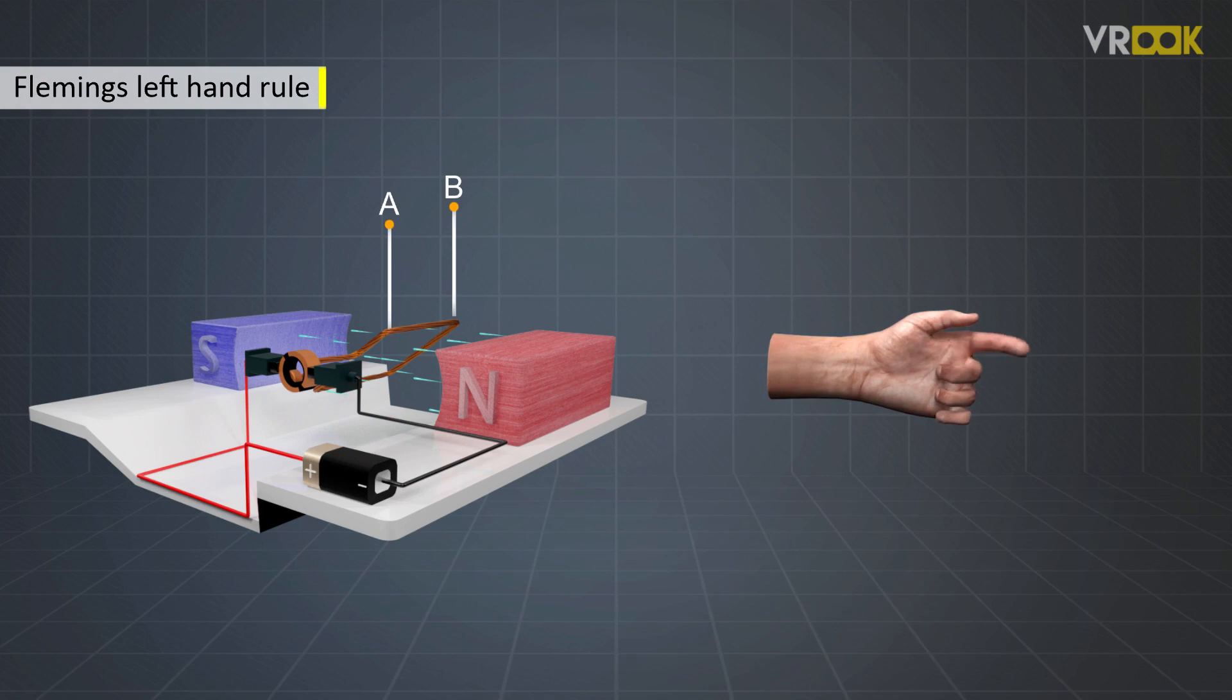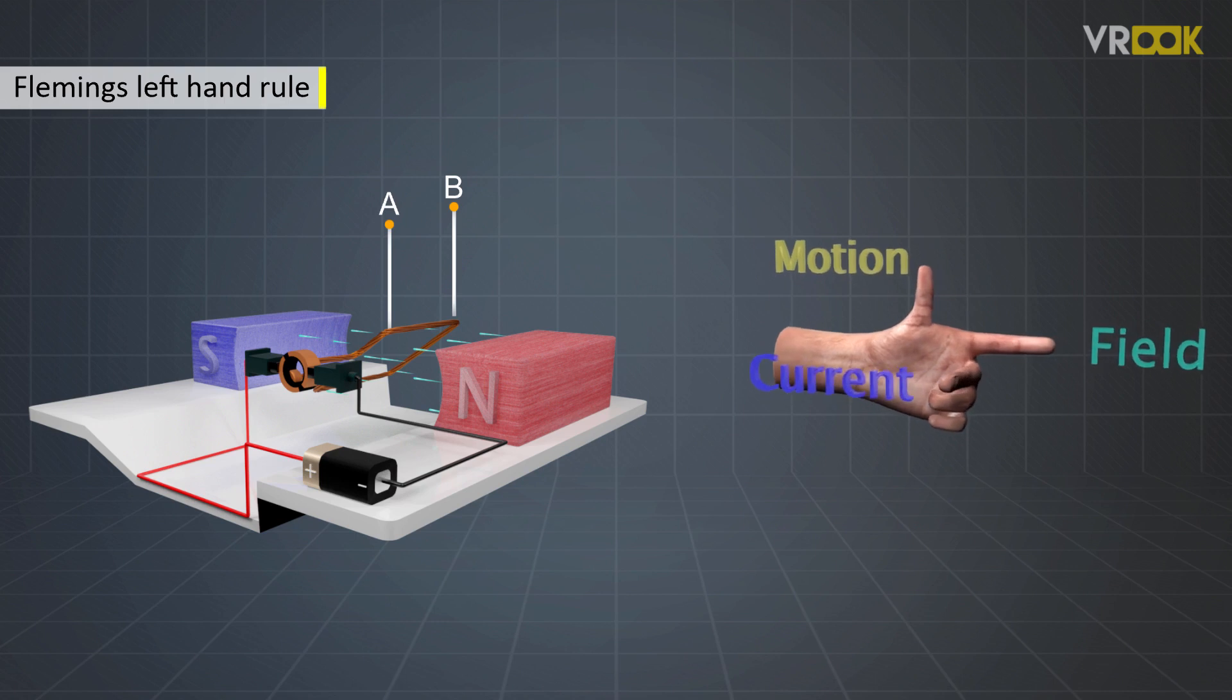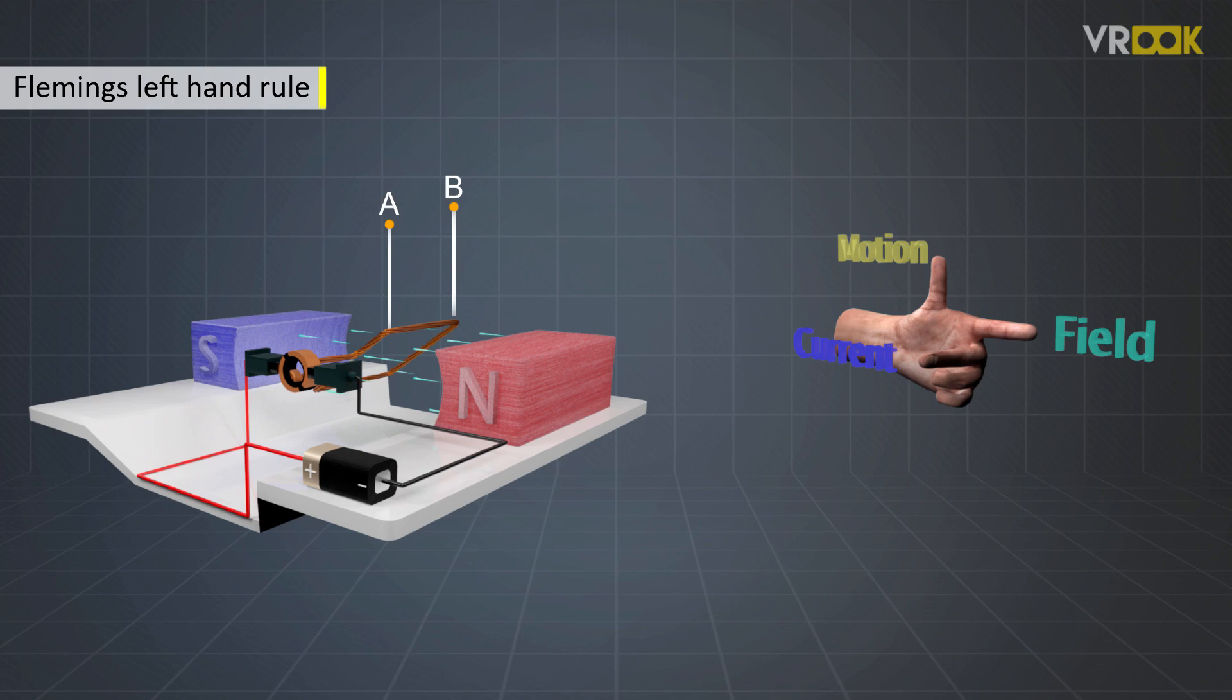It says stretch your thumb, forefinger and second finger perpendicular to each other. If the forefinger points in the direction of the magnetic field and the second finger in the direction of current flowing through the conductor, then the thumb will give the direction of motion of the conductor.